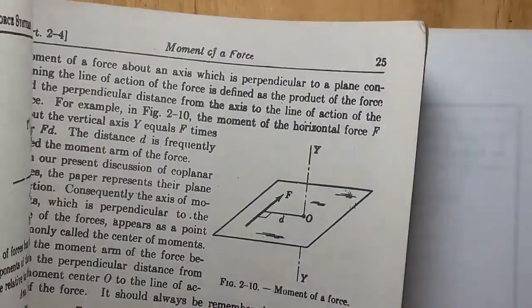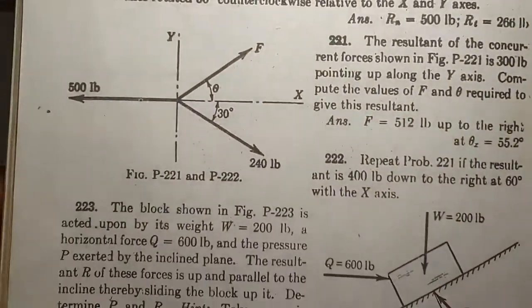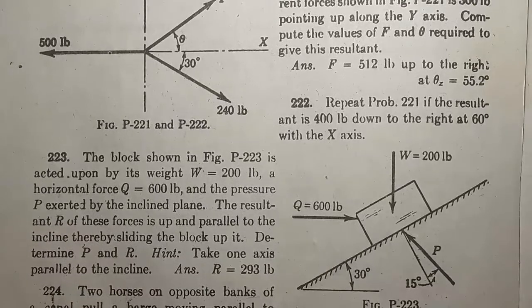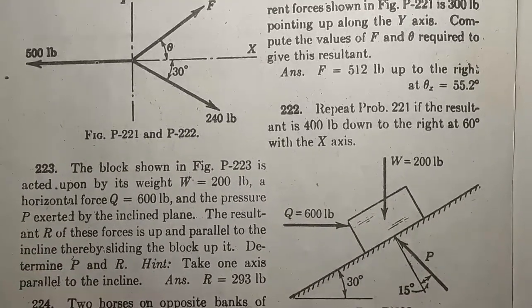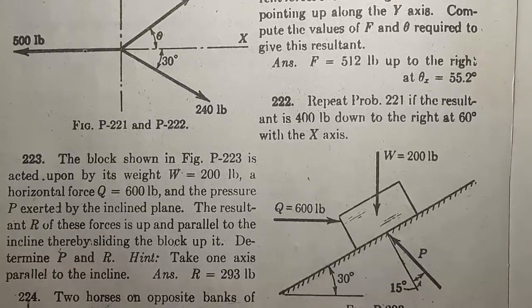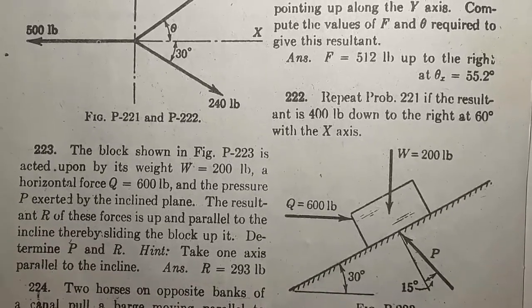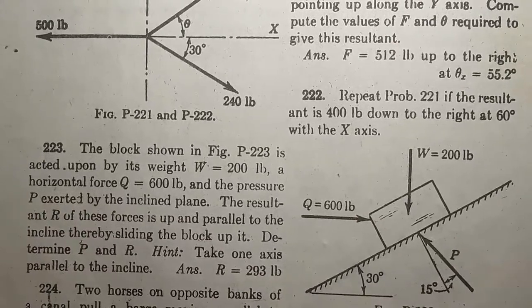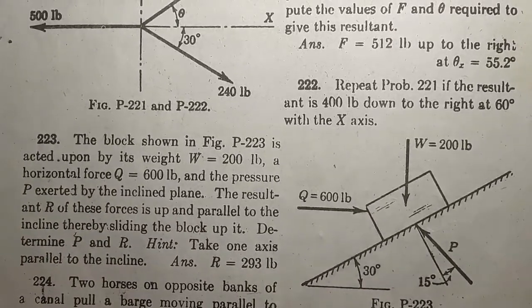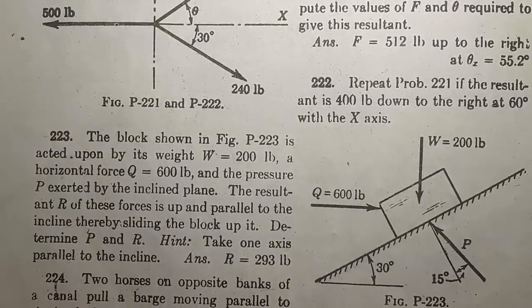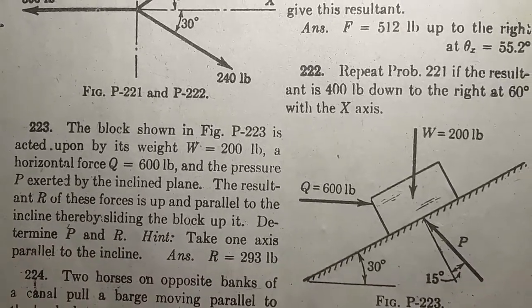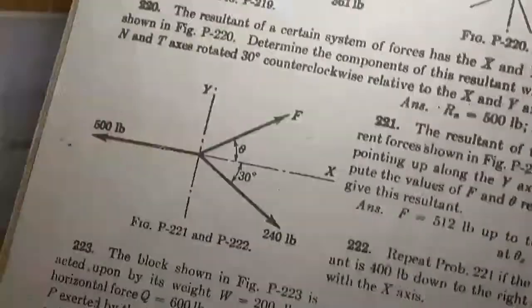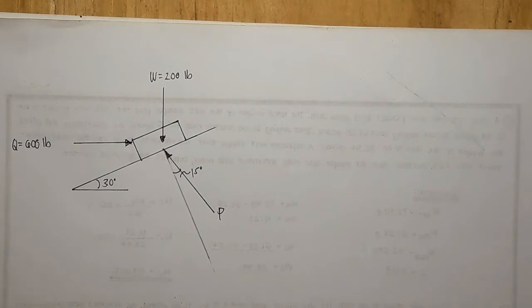This problem I got from this book, page 24, problem 223. The problem states that the block shown in figure P-223 is acted upon by its weight 200 pounds, a horizontal force Q equals 600 pounds, and the pressure P exerted by inclined plane. The book gives us the answer so we can check if our solution or answer is correct.